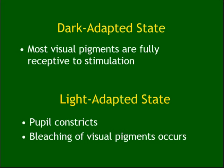Dark and light adaptation: when it is dark, you dilate your pupil to get as much light as possible because there is less than normal light available. When it is light, you constrict your pupil. This is the opposite response.